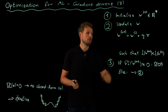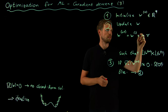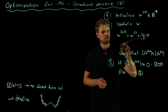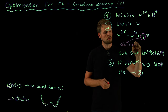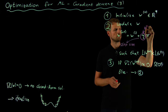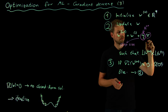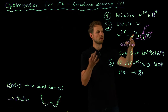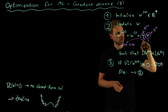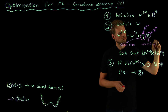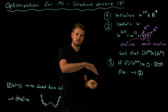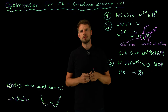Now let's talk about the two parameters. η (eta) is the step size — a positive real number. v is the descent direction — a real-valued vector with q entries, the same dimension as w. The descent direction tells us which way is downhill, and the step size tells us how far to go downhill.